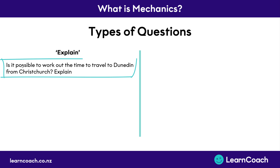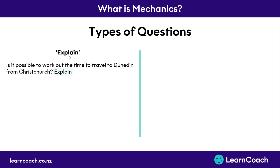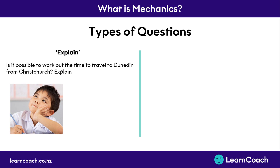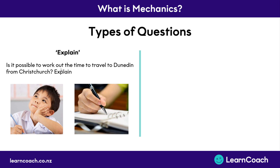An explain question looks something like the example on the left: 'Is it possible to work out the time to travel to Dunedin from Christchurch?' You know it's an explain question because it has the word 'explain' somewhere in the question. When they ask you a question like this, they don't want a number answer — they want you to think about it and write down a word answer. So you might say something like: 'Yes, it is possible to work out the time to travel from Dunedin to Christchurch, but you'd need to know the speed and you'd need to know the distance.' This is an appropriate answer for an explain question because it needs to be answered in words.